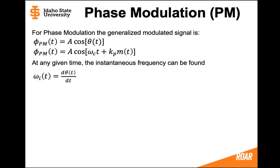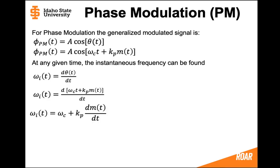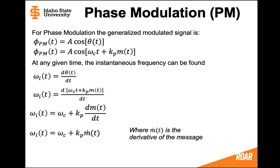At any given time, we can find the instantaneous frequency of the phase modulated signal by performing a derivative of the angle. If we perform the derivative of that angle, the derivative of the omega_c*t part is going to be omega_c, and then the derivative of the other part — moving the constant out — is going to be kp multiplied by the derivative of the message. Since we don't always know the message derivative, we can write it as m-dot.